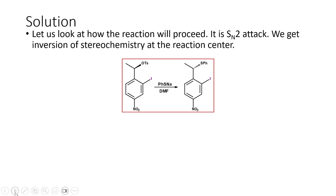This reaction is basically an SN2 reaction. The PhS⁻ (thiolate anion) is the nucleophile that will be involved. The thiolate anion can easily attack the benzylic carbon atom. Since this is an SN2 attack, inversion of stereochemistry will happen — if it is pointing above, the product is going to be formed pointing below.